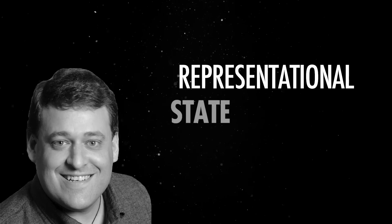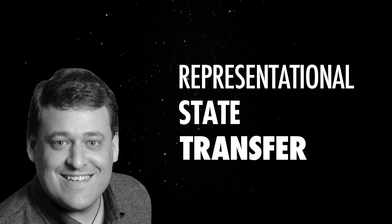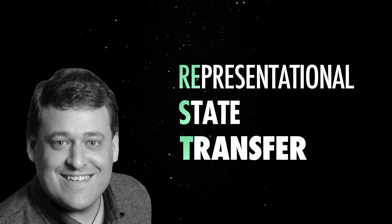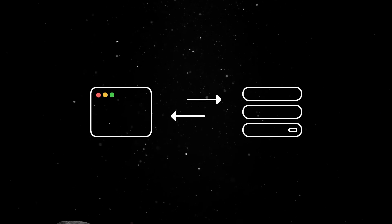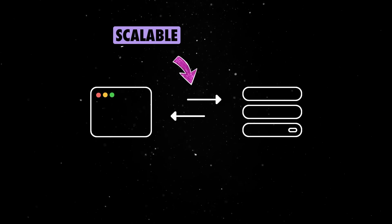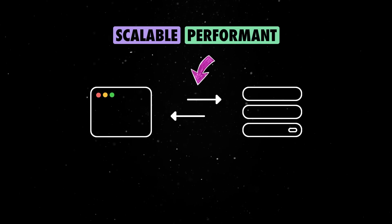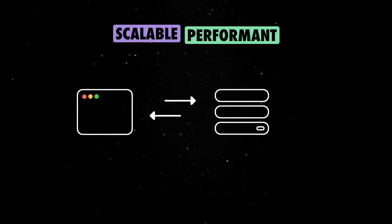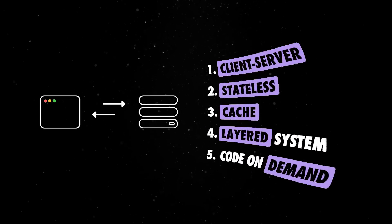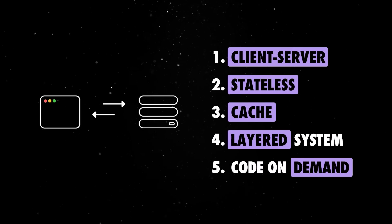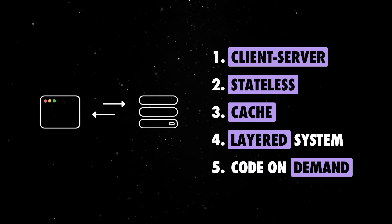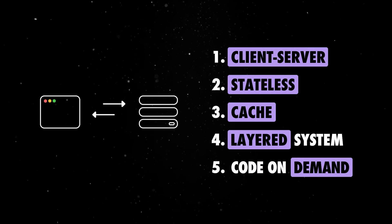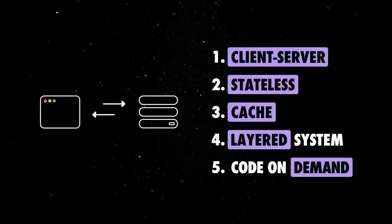Roy Fielding introduced the Representational State Transfer, also known as the REST model, back in the year 2000, in an attempt to improve the scalability and performance of network-based software systems through a set of sensible architectural principles. This model has since become the industry standard for building modern web applications and services.